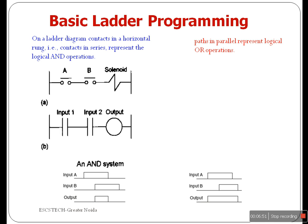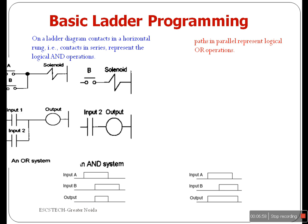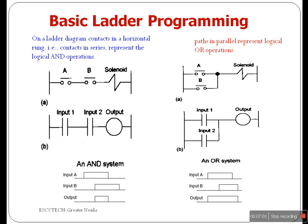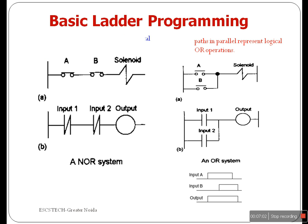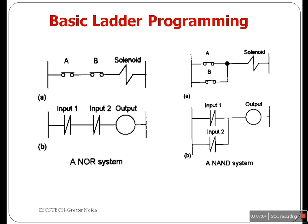For OR logic, input A or input B must be ON for there to be an output. Power only flows through a normally closed contact when the device assigned to the contact is in its OFF state. For a NOR gate, both inputs must be low to energize the output.